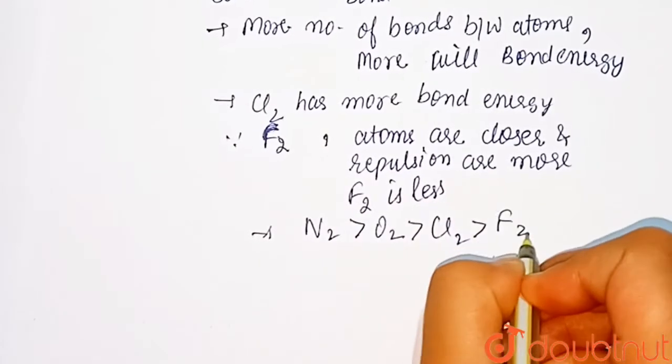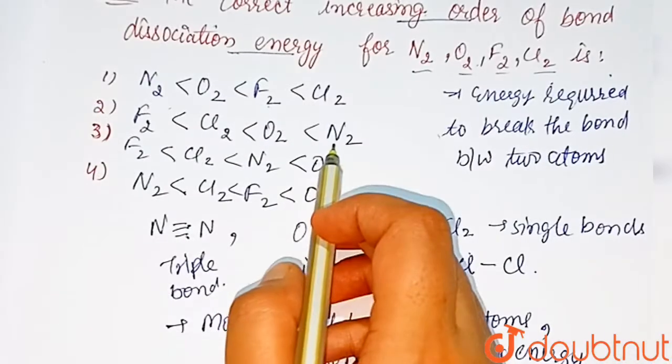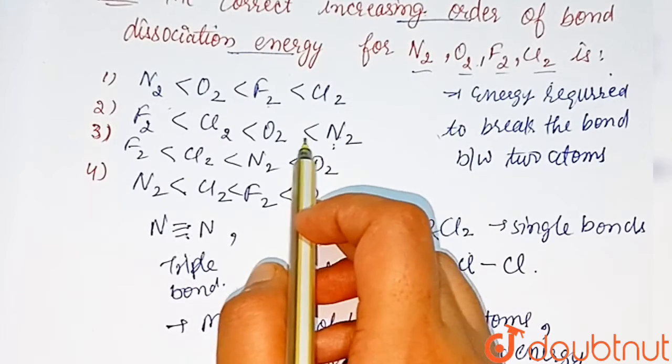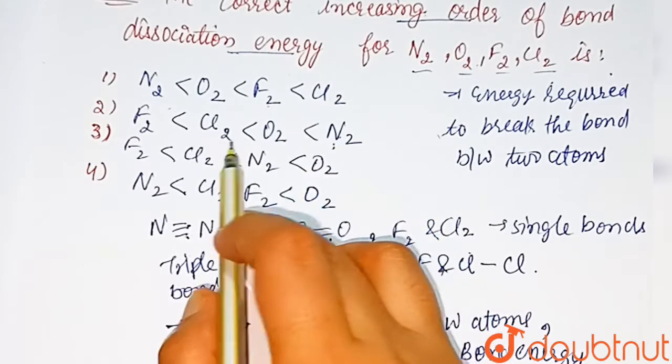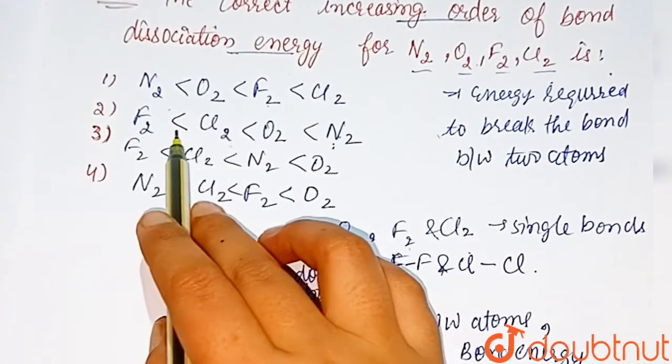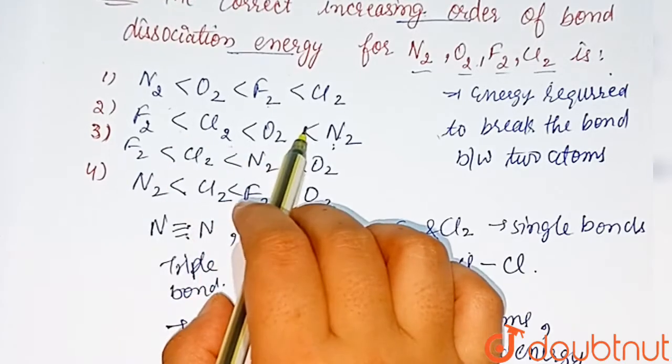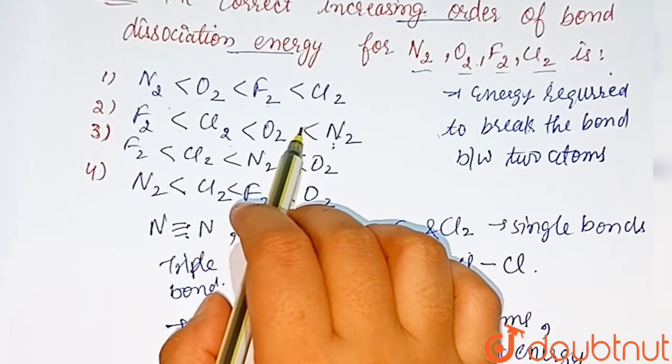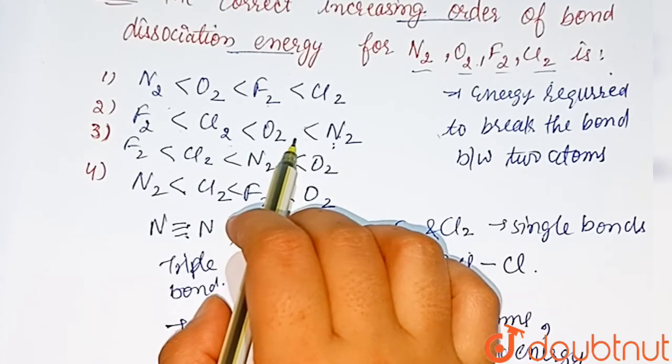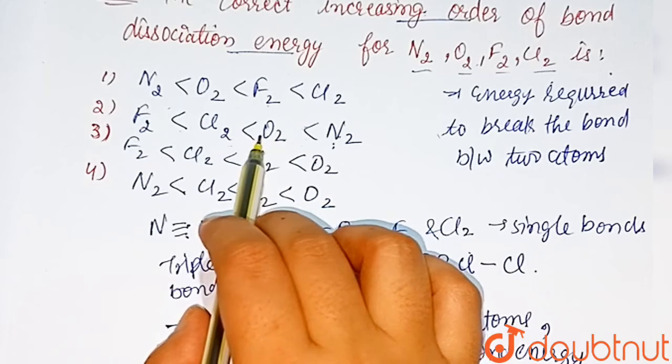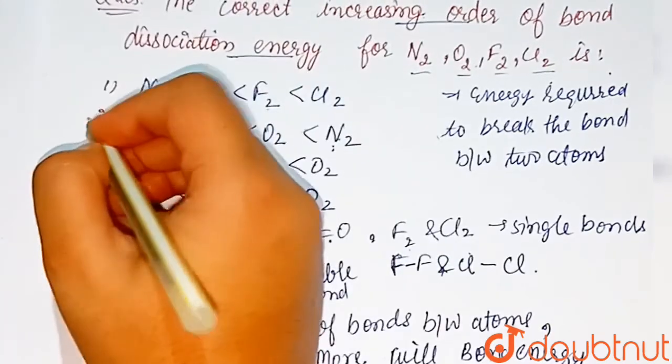N2 is greater than O2, O2 is greater than Cl2, Cl2 is greater than F2. So N2 requires more energy to break the bond between atoms, then oxygen, then chlorine, then fluorine. So option two is the correct answer of this question.